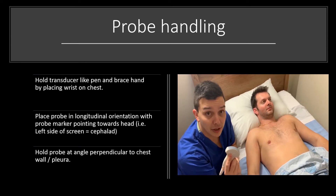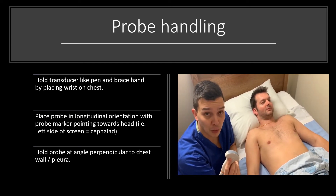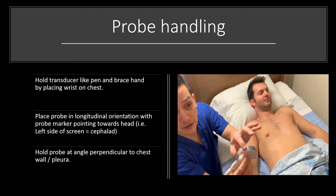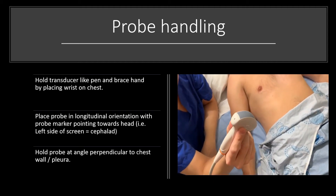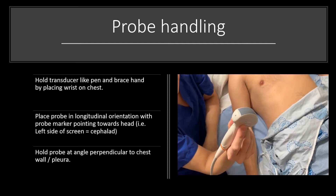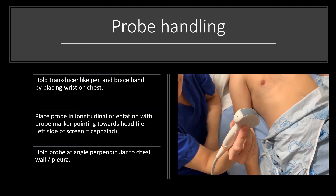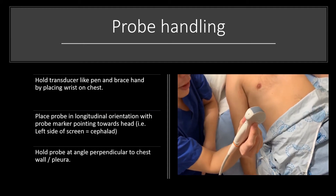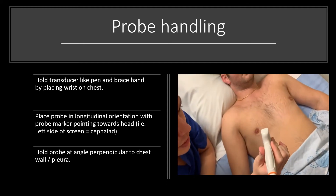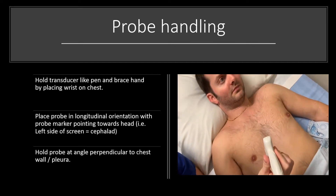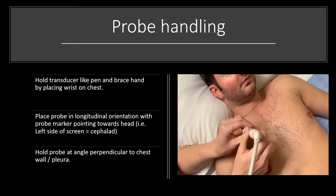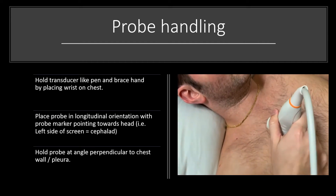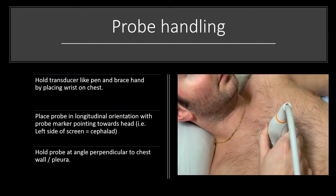Next we'll discuss the positioning and placement of the probe. We always want to make sure that our marker is always positioned towards the patient's head, which will correspond to the left side of the screen on point-of-care ultrasound devices. We will be examining the blue points, and we want to make sure that when we hold the probe we hold it like a pen, and we want it as perpendicular as possible to the chest wall and to the pleura.